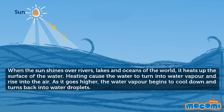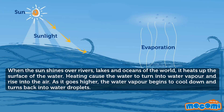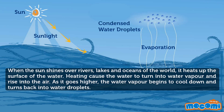When the sun shines over rivers, lakes and oceans of the world, it heats up the surface of the water. Heating causes the water to turn into water vapor and rise into the air. As it goes higher, the water vapor begins to cool down and turns back into water droplets.